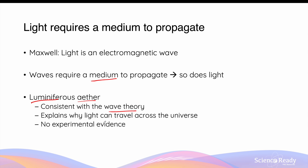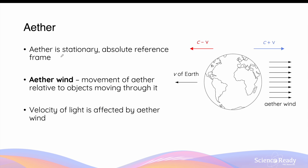However, it is important to know that the ether model did not have any experimental evidence — it was purely theoretical. In the ether model, the ether is thought to be stationary and is thought to be the absolute frame of reference for all moving objects.